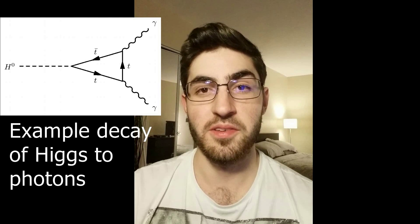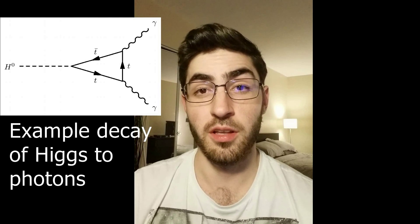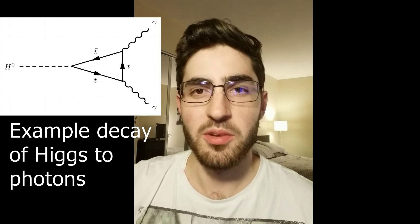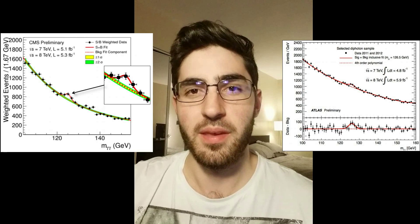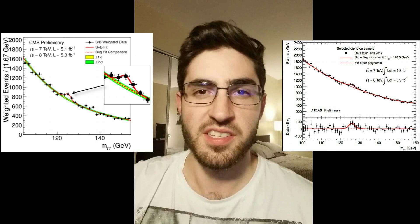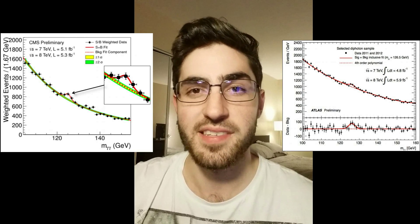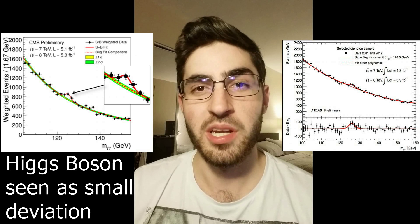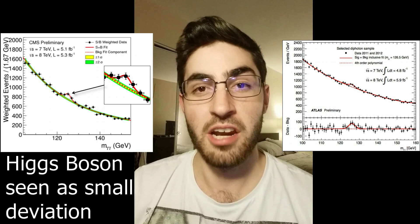Well, actually that's not quite true. The Higgs boson is really massive, and it won't live for very long. But it will decay into other particles that do live for a long time, and we can detect these particles. Once detected, we can use information about them to confirm the existence of the Higgs boson and determine its mass. And this is exactly what happened in 2012 at the Large Hadron Collider.